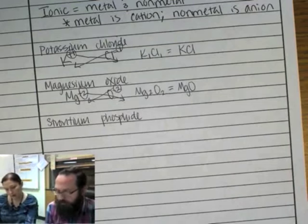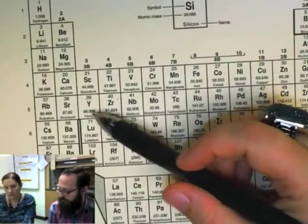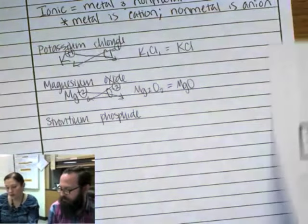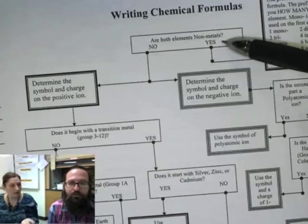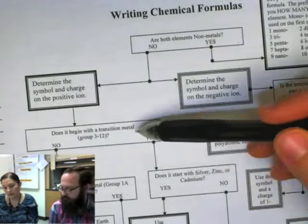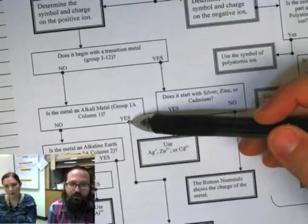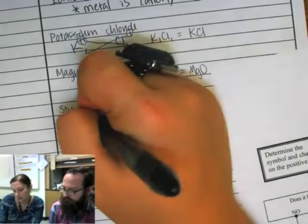Let's do one more just for practice. Strontium phosphide. So I guess let's look up strontium first. We don't use that one very much. Where is it at? It's right here. So that's column two. So if I look here, are they both nonmetals? Well, you told me the left is metals. So no. So let's get the symbol and charge on the positive ion. Does it begin with a transition metal? No, it does not. Is the metal an alkaline metal? No, it's not in group one. Is it alkaline earth? It is. So I'm going to give it that plus two charge. So over here, I'm going to write strontium plus two.